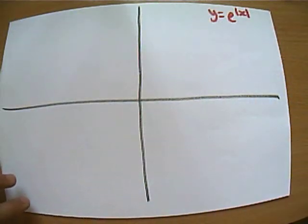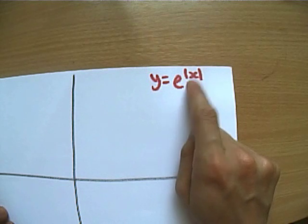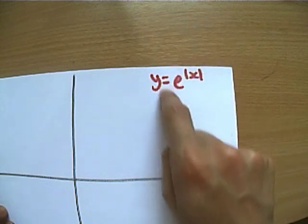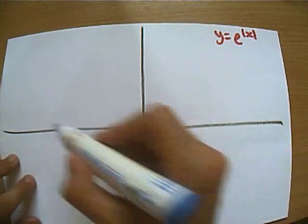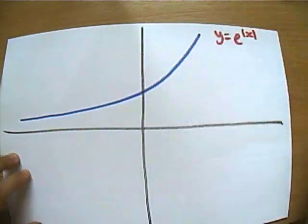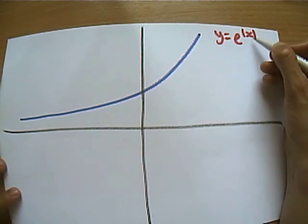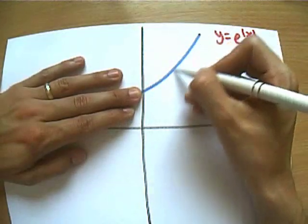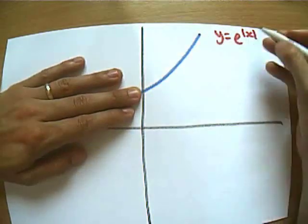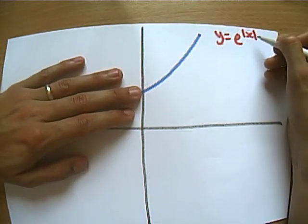And finally, but by no means leastly, what about the graph of e to the power of mod x? Let's have a think. It's an e to the x graph, let's start off with our standard e to the x graph. Now what does mod tell us? It says if it's negative, make it positive. So if we just look at this part of the graph where the x coordinates are already positive, is this part of the graph going to change at all? No, because it's already positive, so mod has no impact.